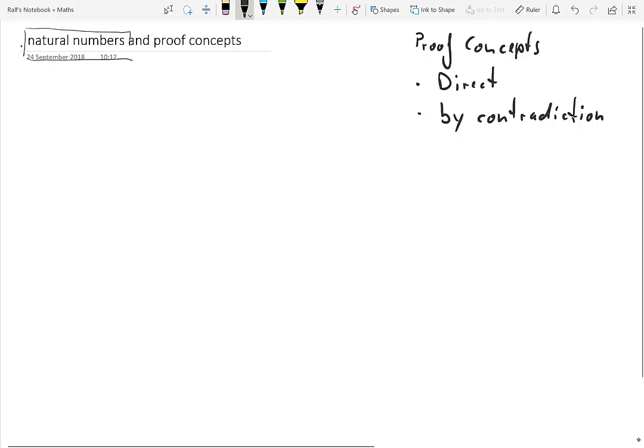In this clip we are going to use properties of natural numbers to demonstrate how to perform a direct proof or a proof by contradiction.